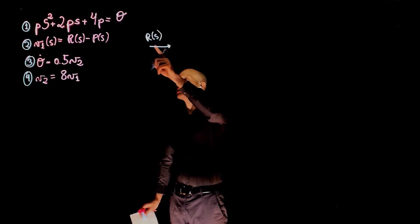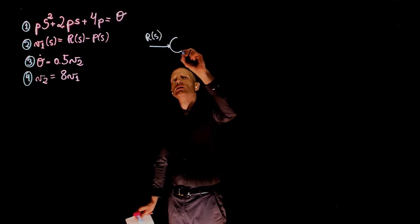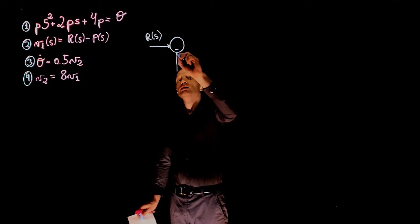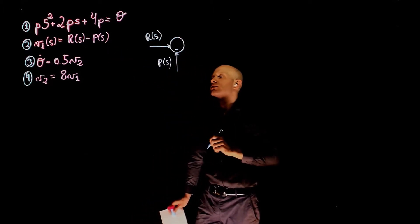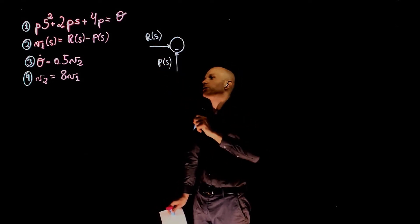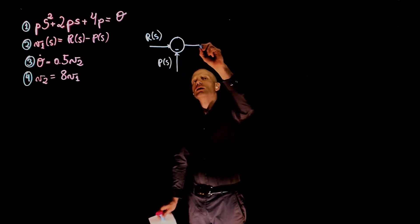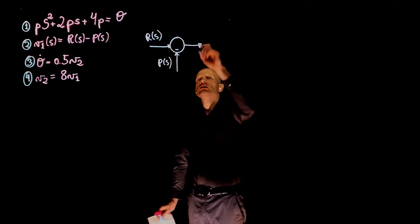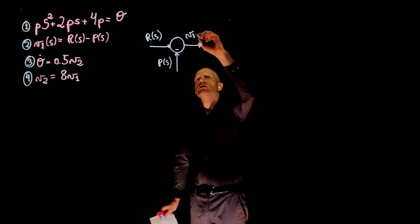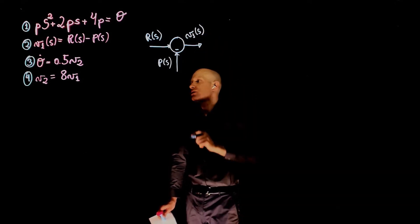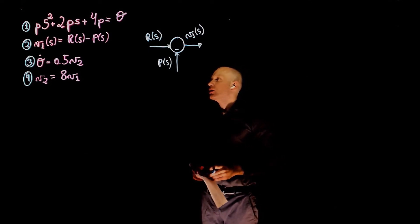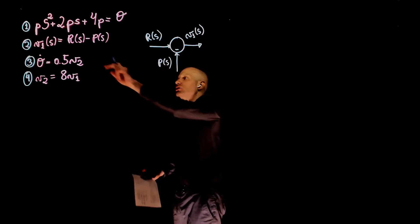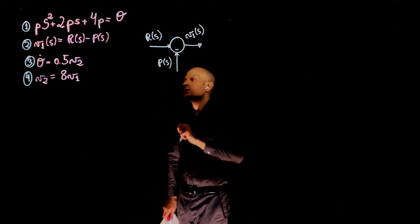So r of s, the input, minus p of s, current position, equals v1. So the output of this sum here is v1 of s. This now represents equation 2. We'll find p of s later.